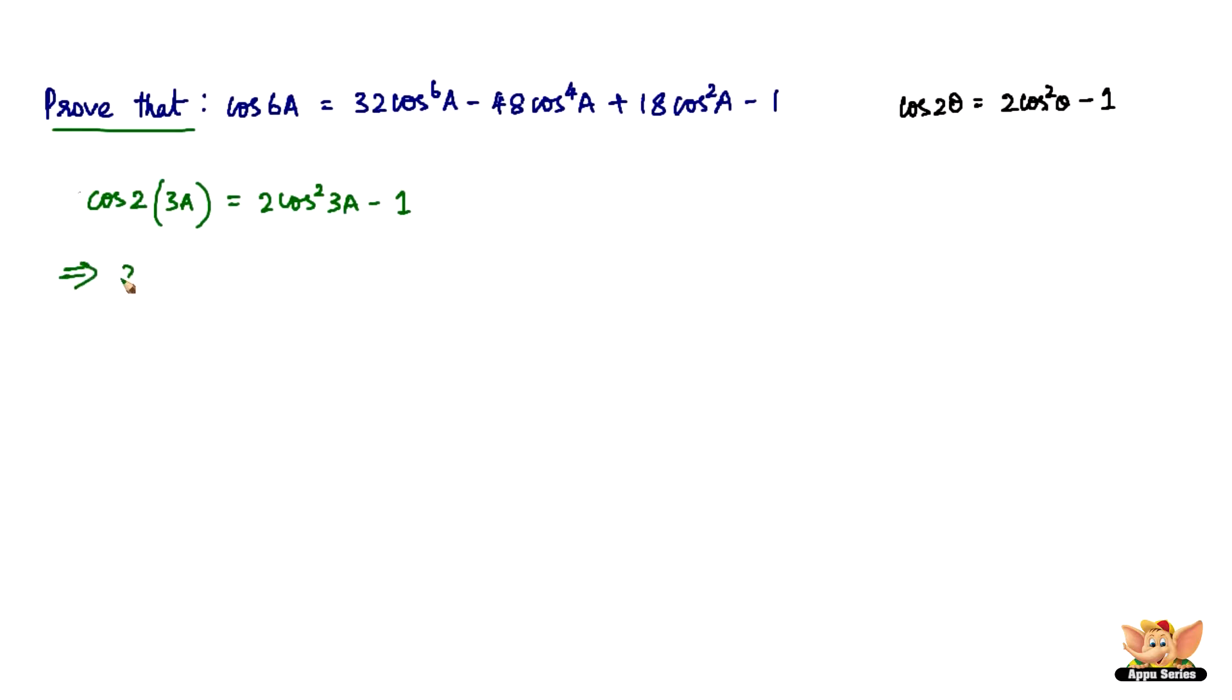So now two times, now what is cos 3a? cos 3a is nothing but 4 cos³a - 3 cos a, but it is cos²(3a), right? So I square the whole thing and I minus 1 here. So that becomes, first let's square this, so it is of the form (a - b)² right? So it's going to be 16 cos⁶a + 9 cos²a minus 2ab, so 2 times 4 is 8, times 3 is 24, minus 24 cos³a into cos a is cos⁴a, minus 1.